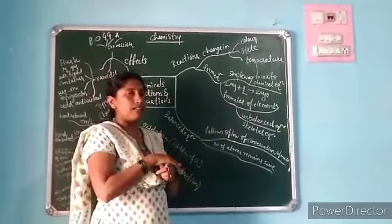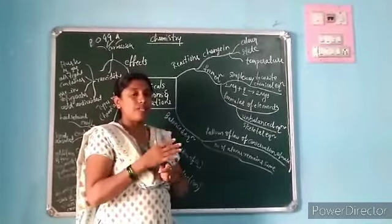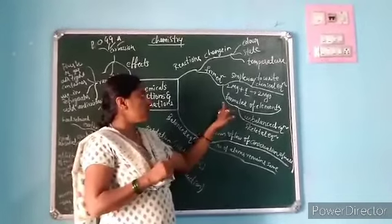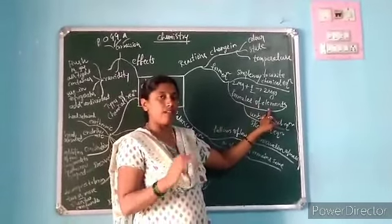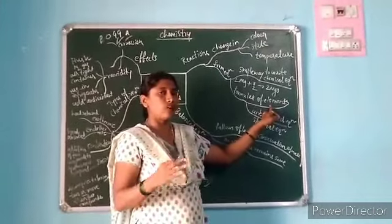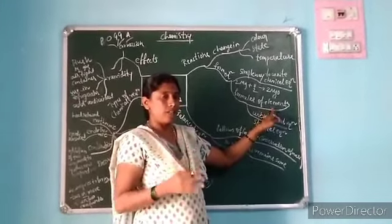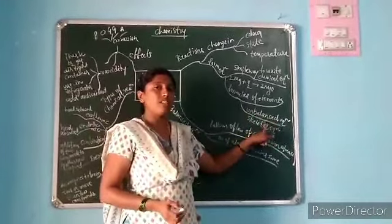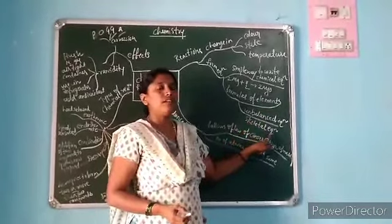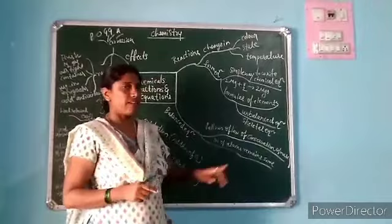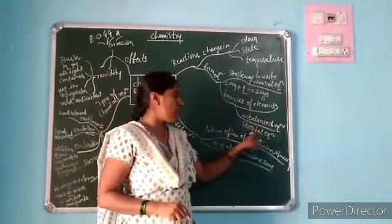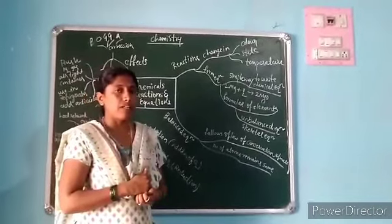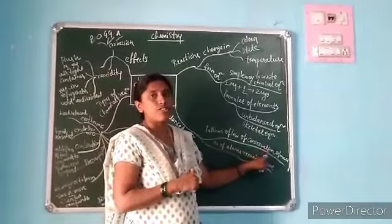Chemical reactions are of two types: one is balanced and another one is unbalanced. Balanced means both the reactants and products have equal amounts of elements — when they have an equal number of atoms, it is called a balanced chemical equation. If it is not balanced, it is an unbalanced reaction, also called a skeletal equation. The balanced chemical equation follows the law of conservation of mass.